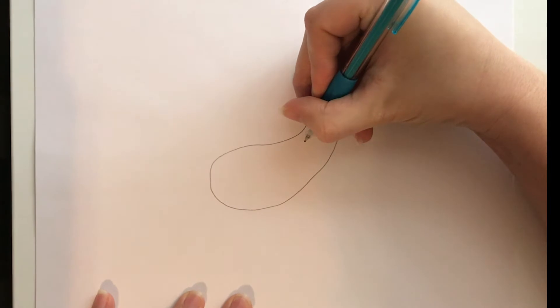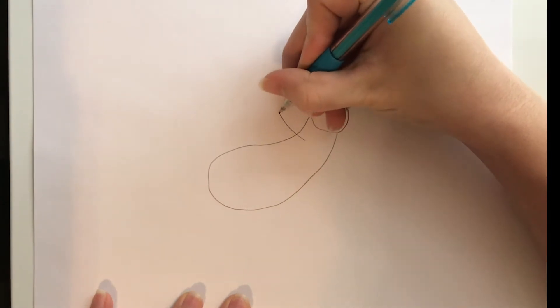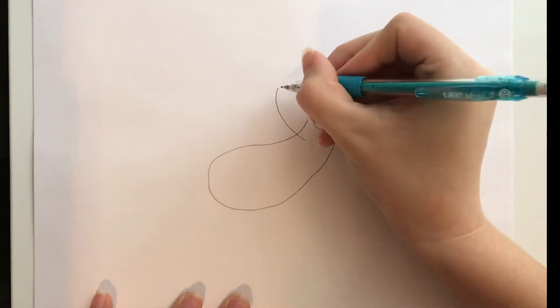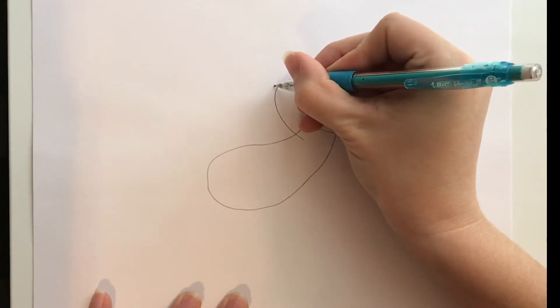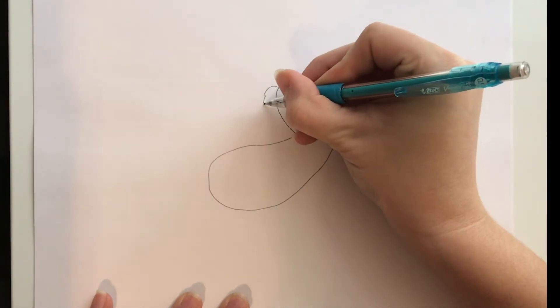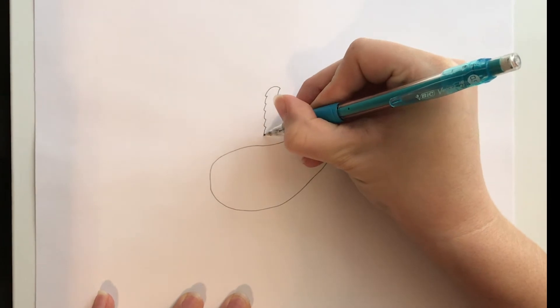From there we're going to add our sloth's arms and draw one arm looping up, give it kind of a curl over for the hand and then those ruffles are going to be the sloth's fur.